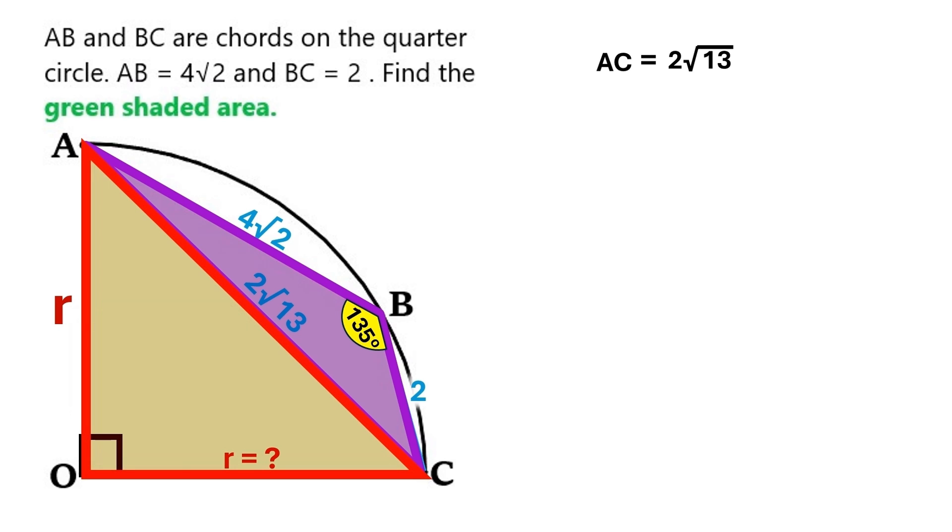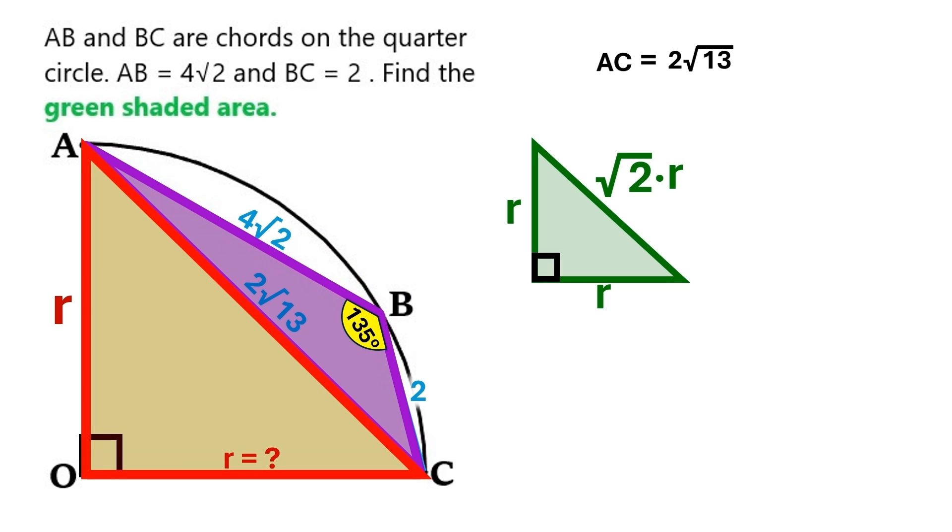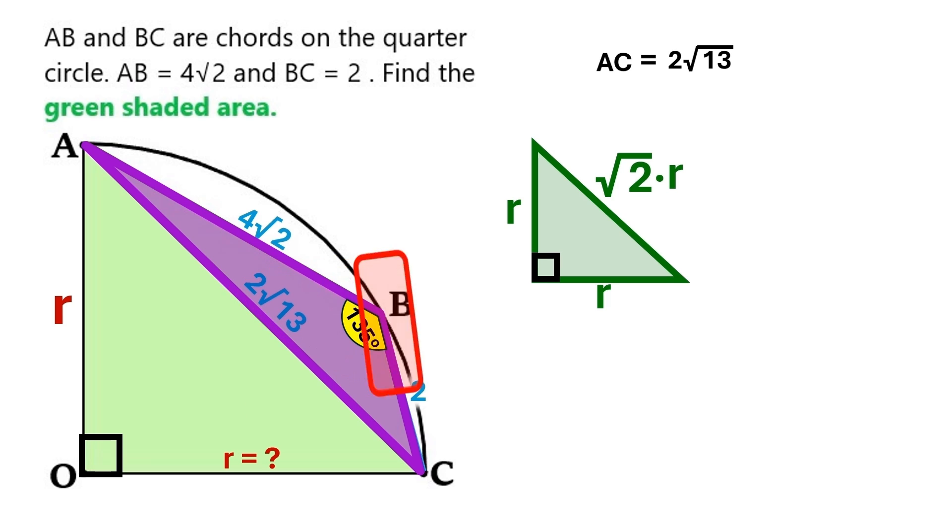The triangle AOC is a right triangle, and it's an isosceles triangle too. In an isosceles right triangle, if the legs are x, the hypotenuse is always root 2 times x. Let's turn these x's into r's. And in the triangle AOC, the hypotenuse is 2 times root 13. So we can write down this equation.